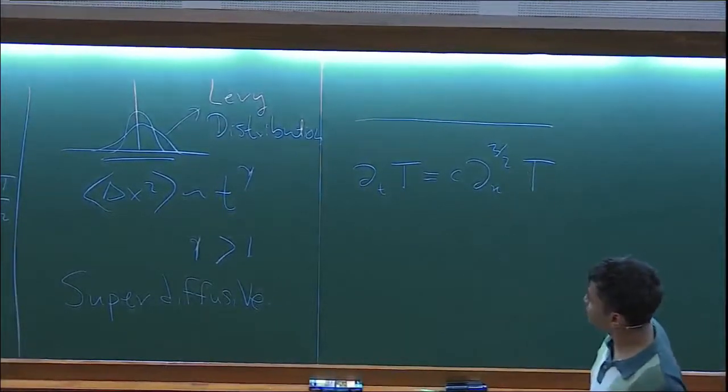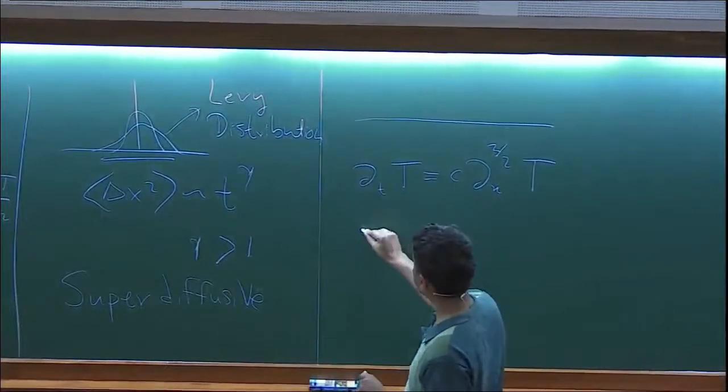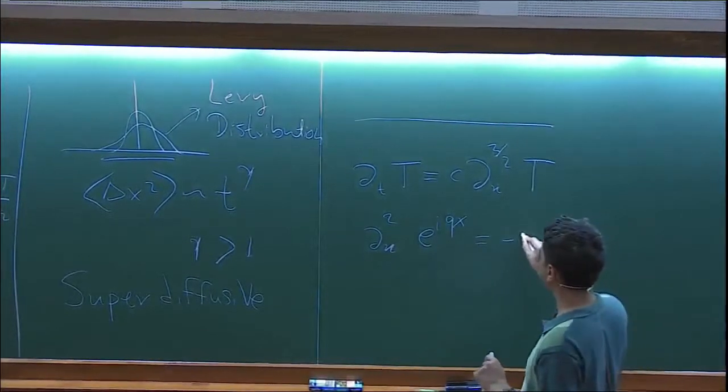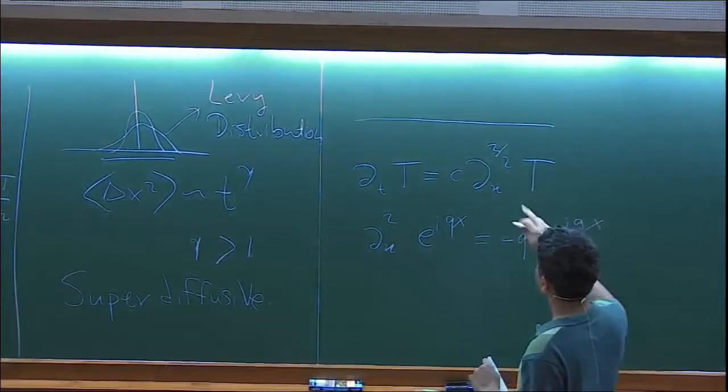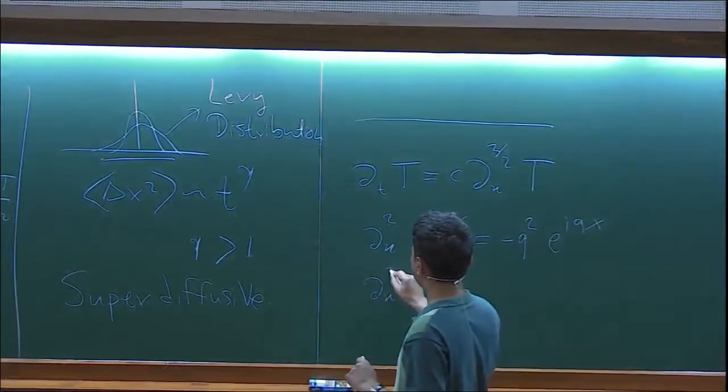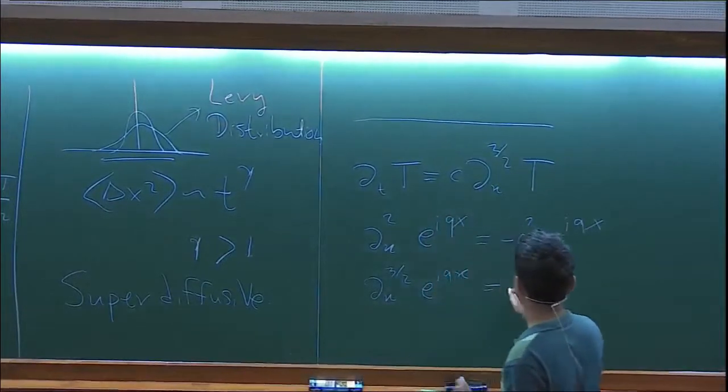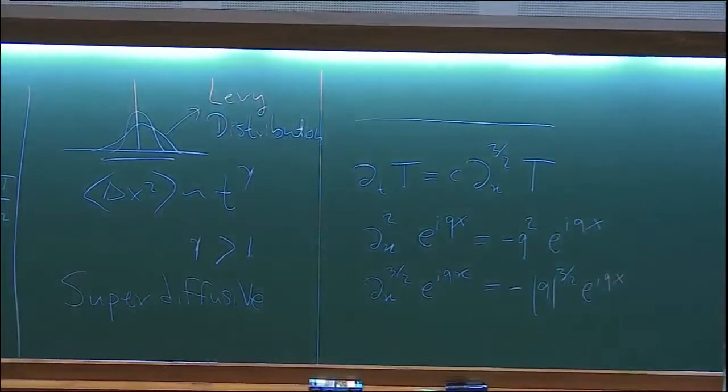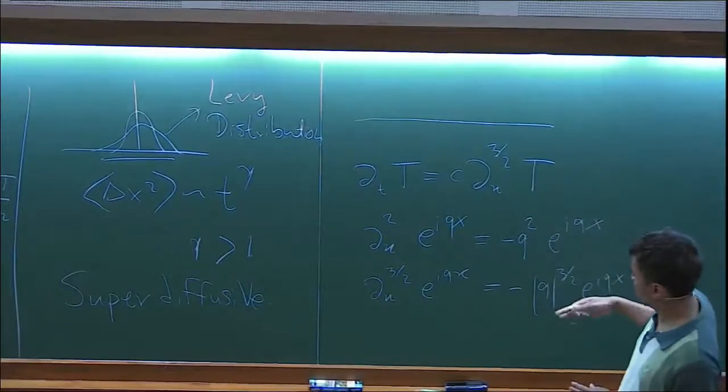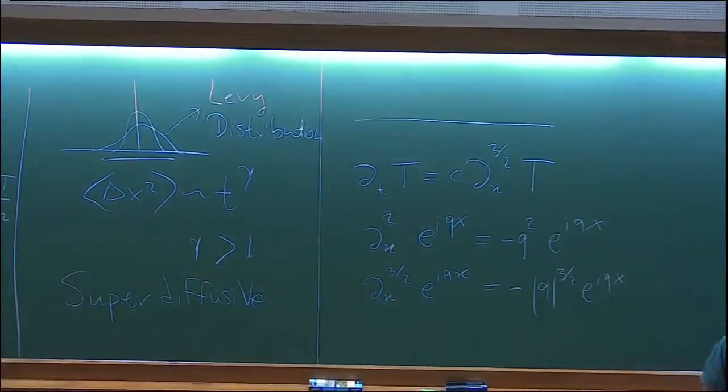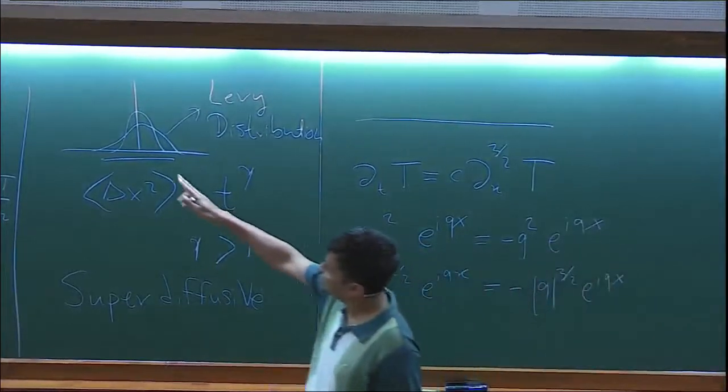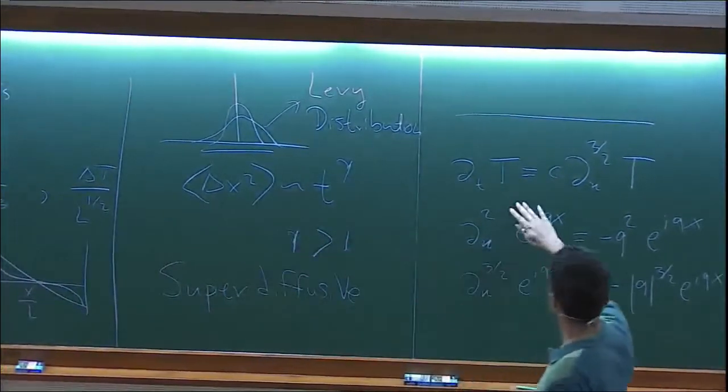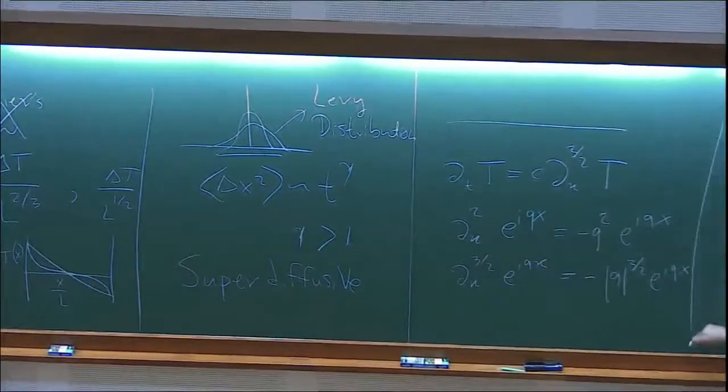So what does this mean on the infinite line? This fractional equation basically means that for the diffusion equation, if you act del X squared on any Fourier component, then this gives minus Q square e to the power IQX. The definition of this operator is that... So this means that if you look at the temperature distribution starting from delta function initial conditions, then you'll immediately get a Levy distribution. For this particular harmonic exchange momentum exchange model, it was shown that you can actually derive this equation. But this is on the infinite line.